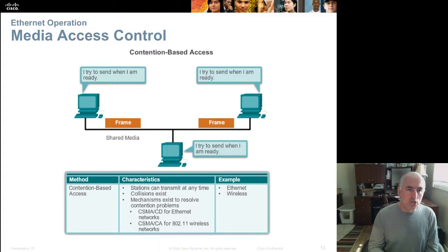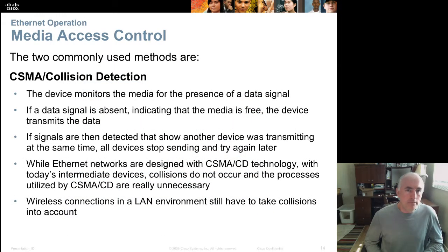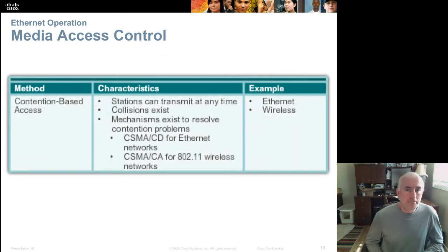We won't go into great detail on CSMA/CA since wireless has its own chapter. CA is collision avoidance — it tries to avoid collisions. The consequence is that on a 54 Mbps wireless connection, you can lose up to half the bandwidth for managing collision avoidances, consuming significant bandwidth and making for a slower connection.